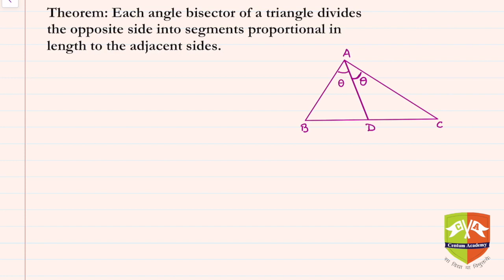Hello friends, we have another theorem here and it says each angle bisector of a triangle divides the opposite side into segments proportional in length to the adjacent sides.